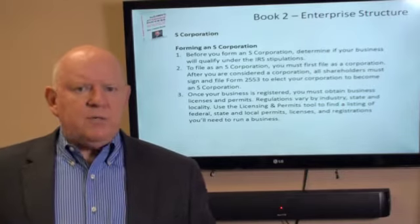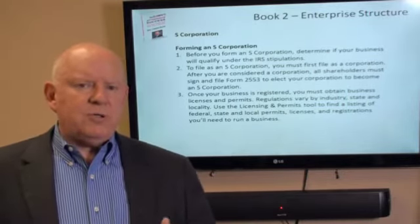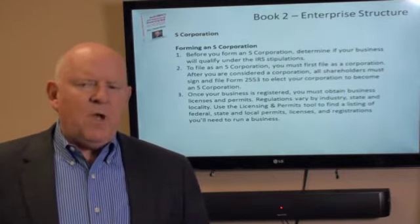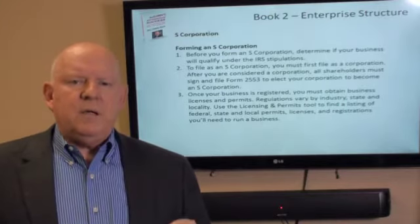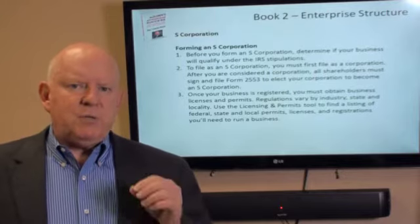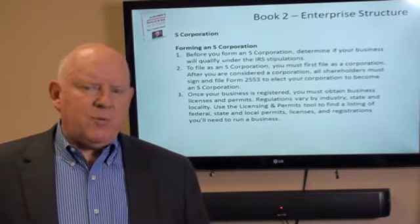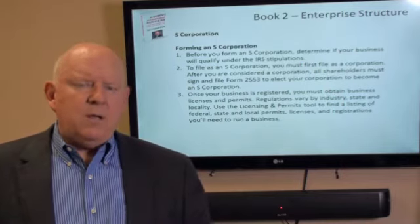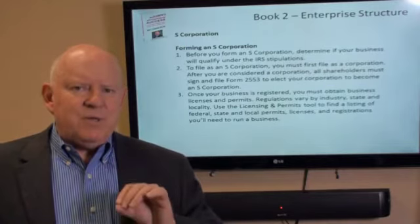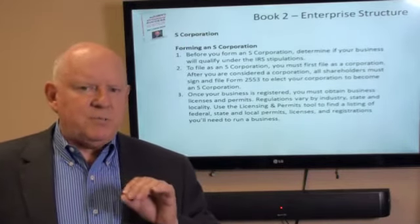You can terminate the S-Corporation election by either voluntarily terminating and filing a document stating you want to terminate at the end of the tax year, or by accepting a shareholder that doesn't fit the required shareholder parameters. An S-Corporation will only allow — per IRS rules — citizens of the United States, corporeal citizens of the United States, to be shareholders.